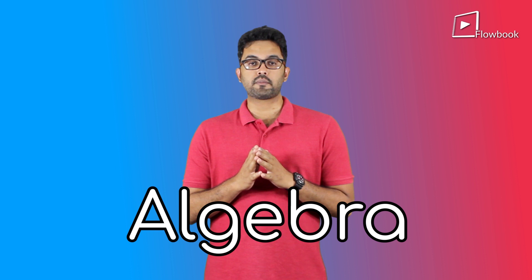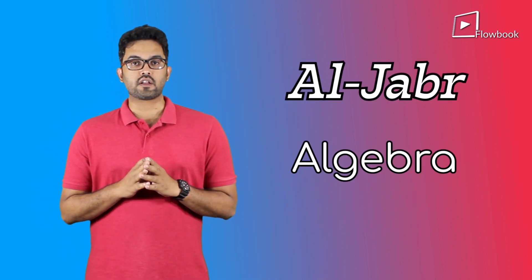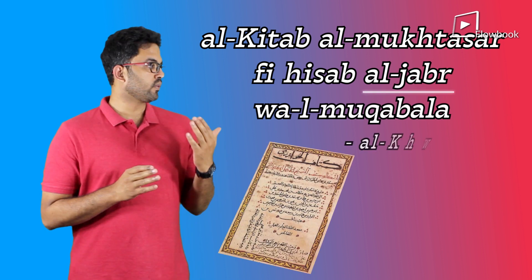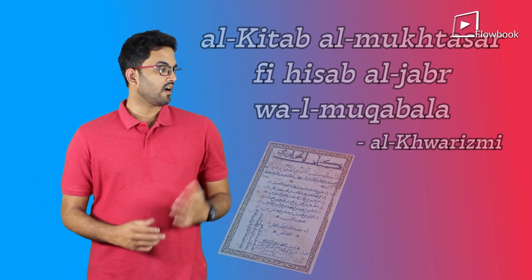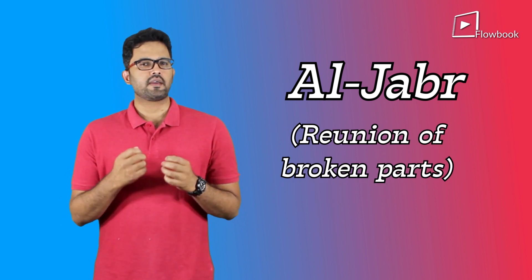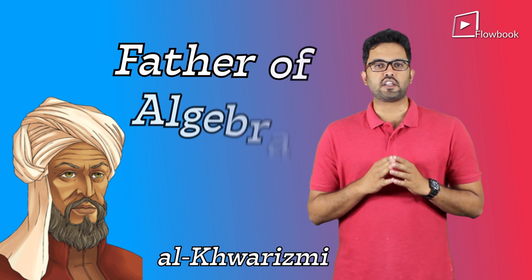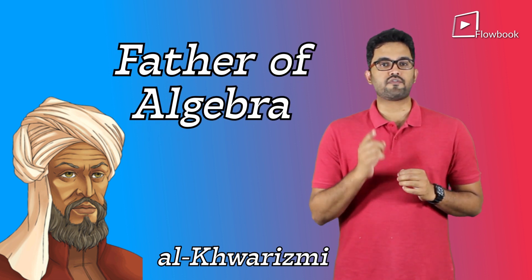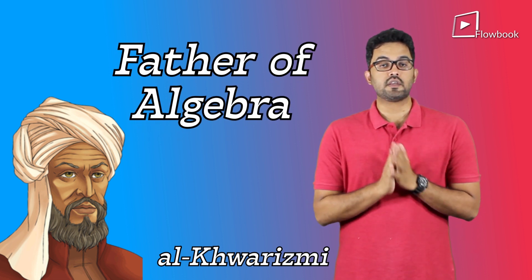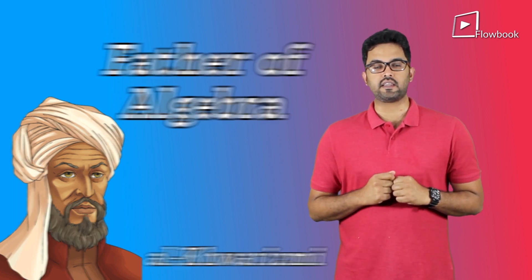Now, algebra the word comes from the Arabic word Al-Jabr, which was also part of the title of the book written by Al-Khwarizmi in Baghdad around the 800s. Al-Jabr means the union of broken parts. This name is quite apt because through the centuries we soon realized that algebra unifies almost all the branches of mathematics. Al-Khwarizmi is also called the father of algebra because he was the first one to structure most of the concepts such as forming algebraic equations and solving them in a way that we still use to this day.